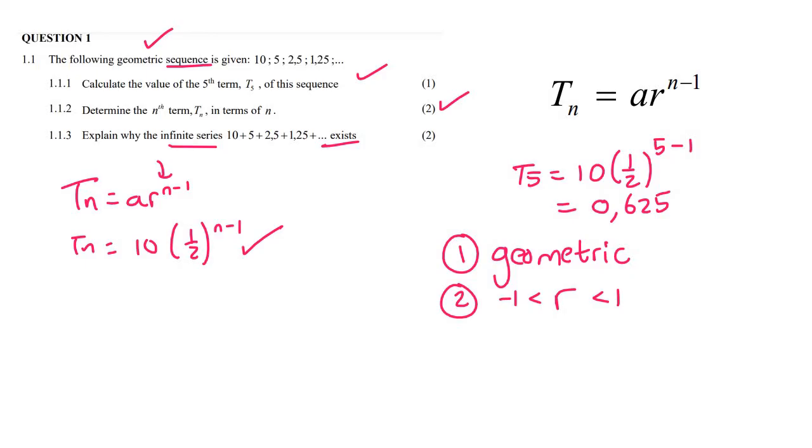Our ratio equals one half, which is between negative 1 and 1. So in the exam, you could say it is geometric and r is between negative 1 and 1.